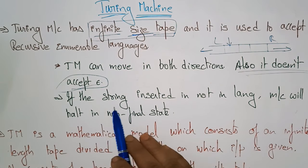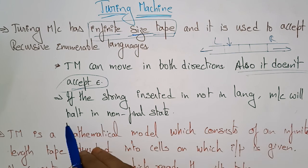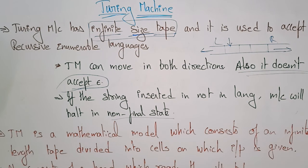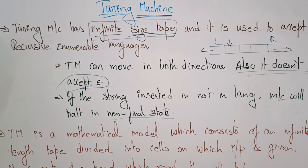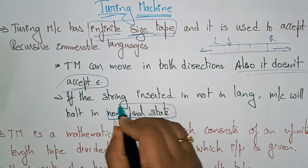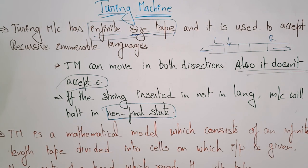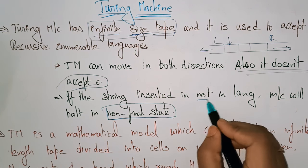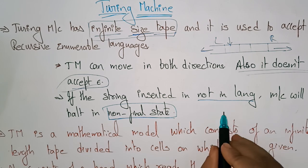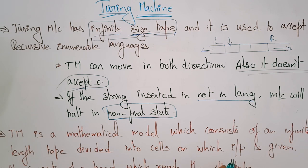If the string inserted is not in the language, the machine will halt in a non-final state. The Turing Machine checks whether the string is accepted or not. If the string is not present in the language, the machine halts in a non-final state. If the string is accepted and is present in the language, the machine will also halt but in the final state.